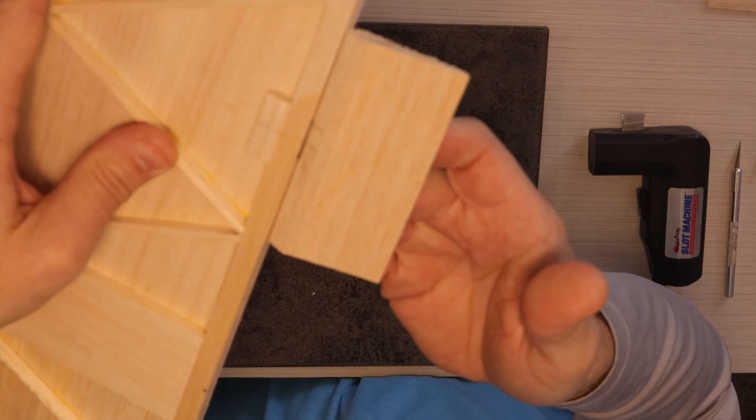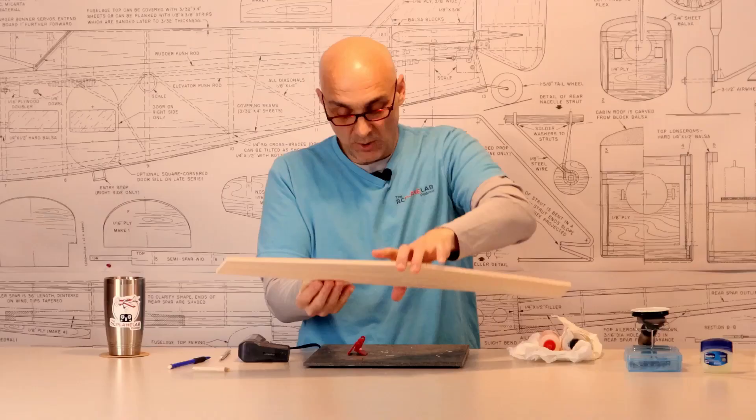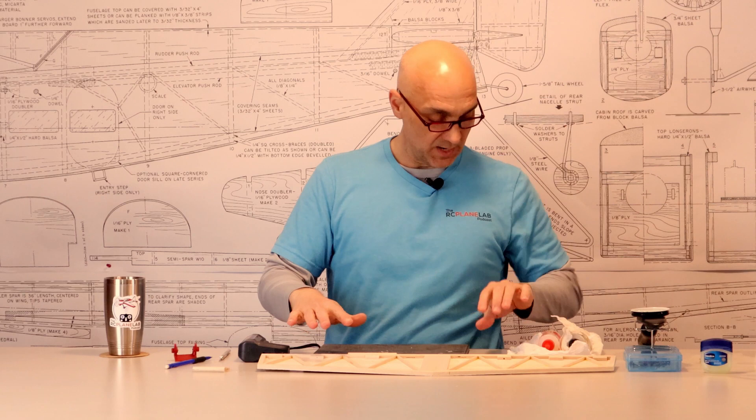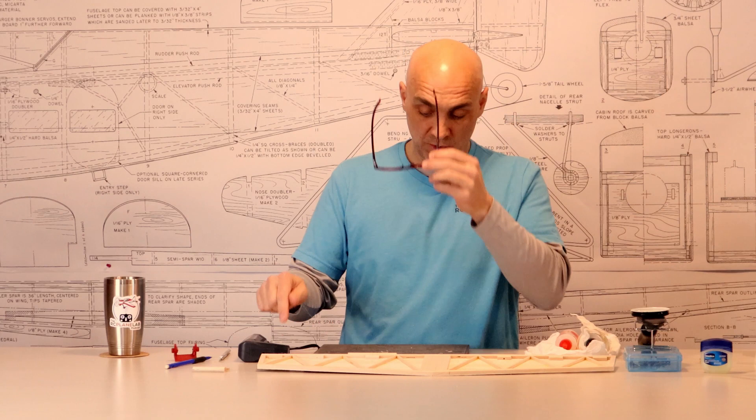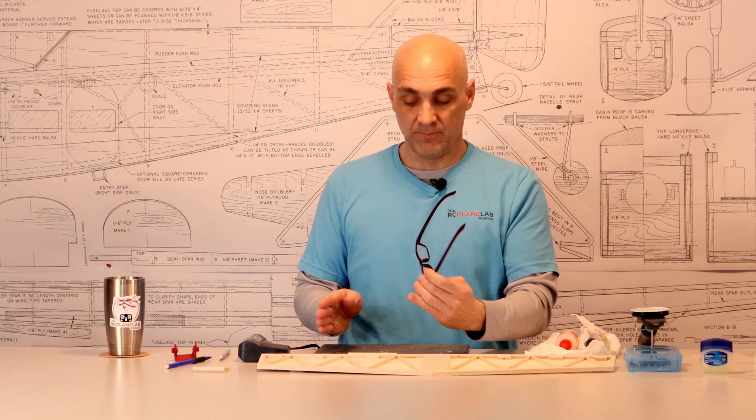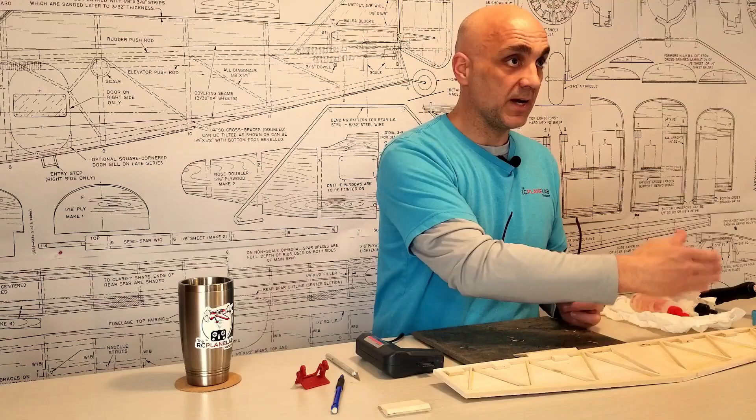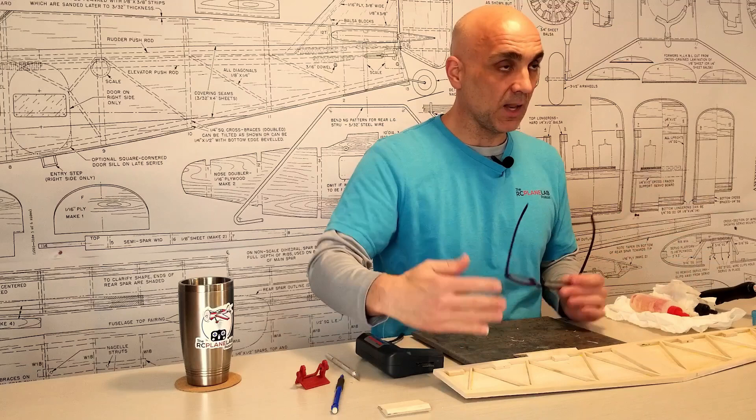Same process as before. I get them all done on my control surface, the horizontal stabilizer in this case. Do all my hinge pockets. And then, go back and do the hinges after I've marked all their positions on my control surface. Just like before with a pinned hinge, alignment is critical. You want to make sure all those pins line up and they're in line with your hinge line. You don't want any binding.